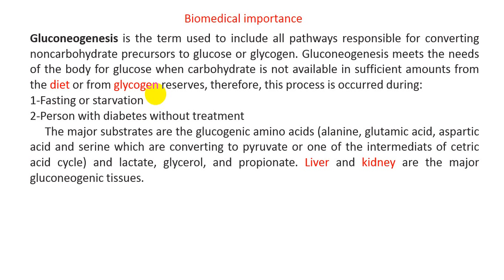Gluconeogenesis is the conversion of non-carbohydrate sources to glucose. The very important question is: what are the major substrates for gluconeogenesis? There is more than one source. For instance, glucogenic amino acids — such as alanine, glutamic acid, aspartic acid, serine, and cysteine — are converted to pyruvate or one of the intermediates of the citric acid cycle.